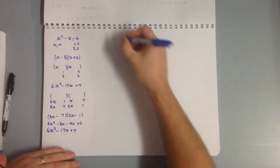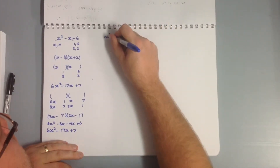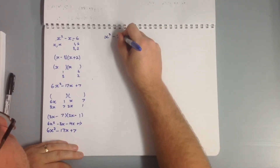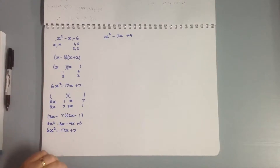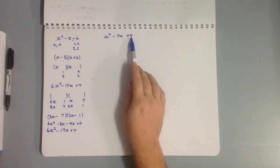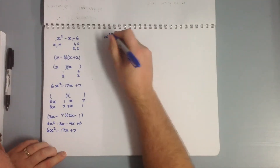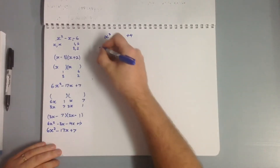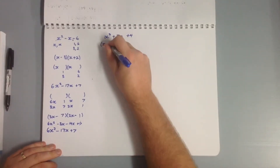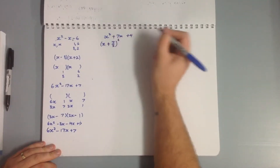We'll have a quick look at completing the square. Let's say we've got x² + 7x + 4. The factors of 4 are 4 and 1, and 2 and 2 — that's not going to factorize normally. So if we complete the square, we write: x + (7/2), all squared...